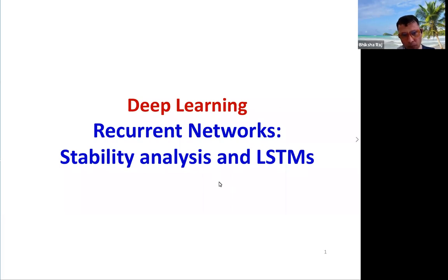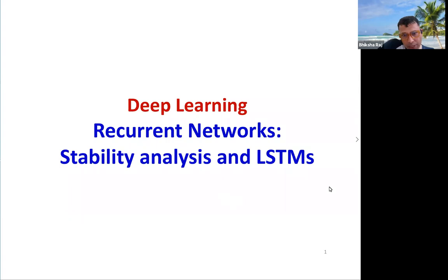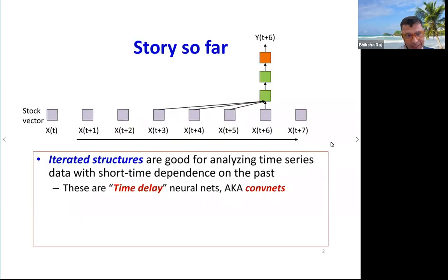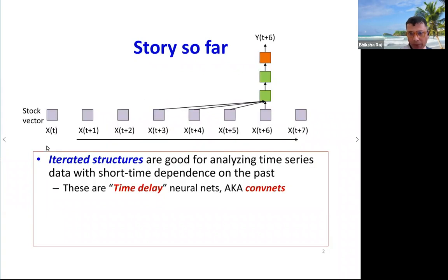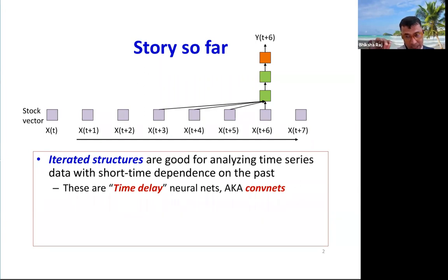Let's begin. We're going to continue with our series on recurrent neural networks, and today's topics are stability analysis and we're going to introduce the notion of gated recurrent neural networks. We've seen so far that networks with iterated structure which scan the input by looking at current and past inputs are good for analyzing time series data, specifically time series data with short-time dependence on the past — the so-called time delay neural networks or 1D convnets.